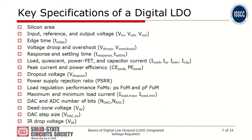In the full tutorial, we're going to introduce the key specifications of a digital LDO in detail. The specifications covered include silicon area, input reference and output voltage, edge time of the load current change, voltage droop and overshoot, response and settling time, load current, power transistor and capacitor current, peak current and power efficiency, dropout voltage, power supply rejection ratio, load regulation, performance figures of merit such as picosecond FOM and picofarad FOM, maximum and minimum load current, DAC and ADC number of bits, digital step size, and IR drop voltage.